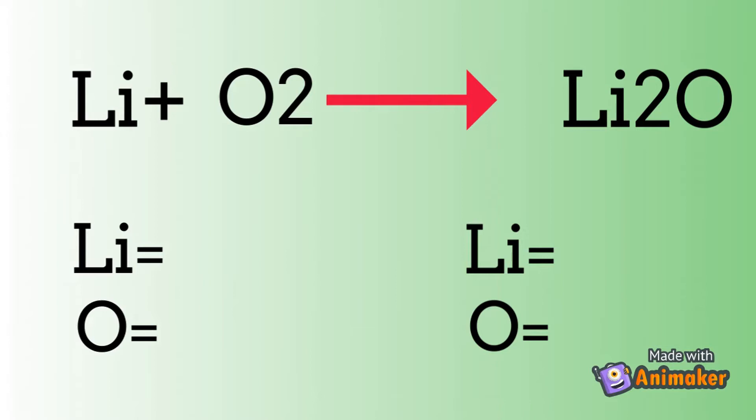Let's count the atoms of each side. We have 1 lithium and 2 oxygens in the left side. And we have 2 lithium and 1 oxygen in the product side.